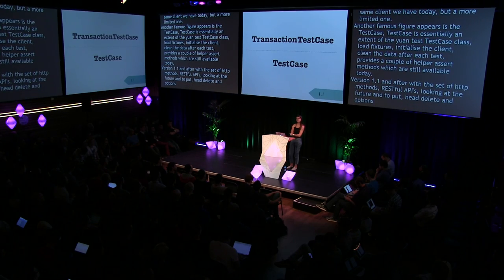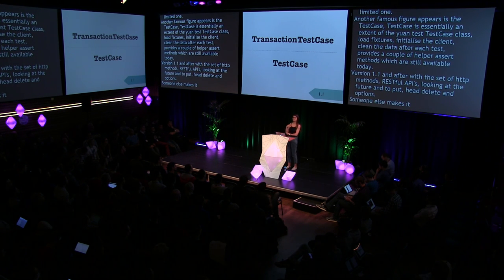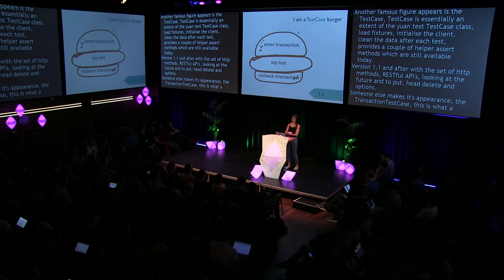Version 1.1 comes shortly after with a revolutionary set of HTTP methods. RESTful APIs are not yet the next big thing, but Django is looking into the future and decides to add PUT, DELETE, and OPTIONS. Someone else makes its appearance: the TransactionTestCase. This is when a clear distinction is made between what is a TestCase and what is a TransactionTestCase.